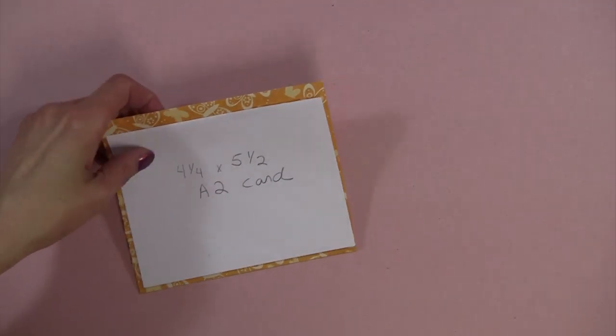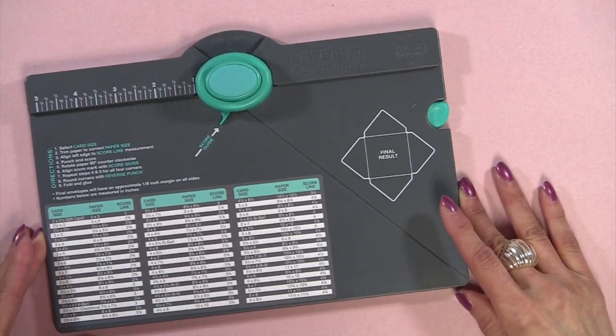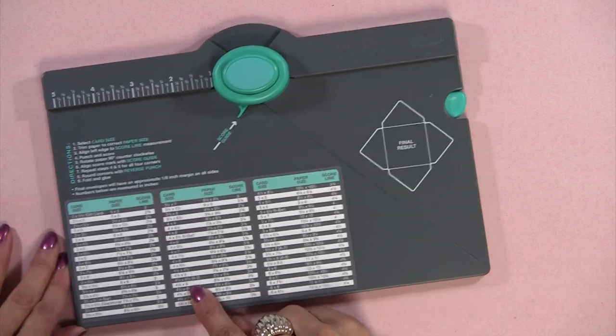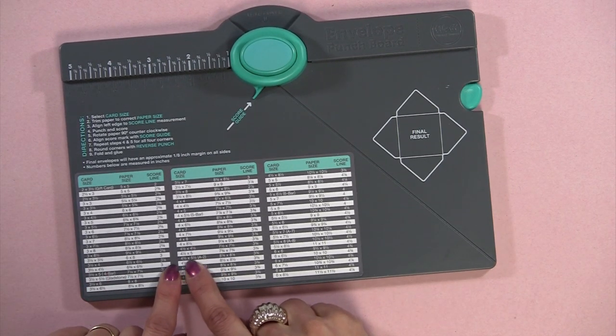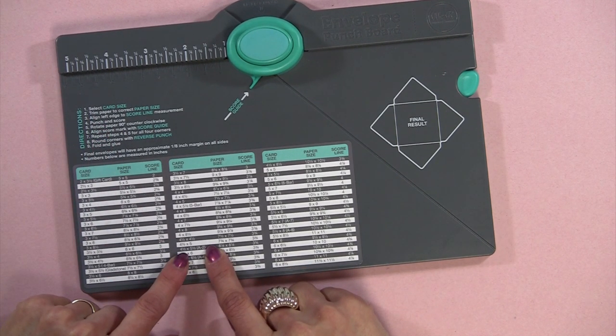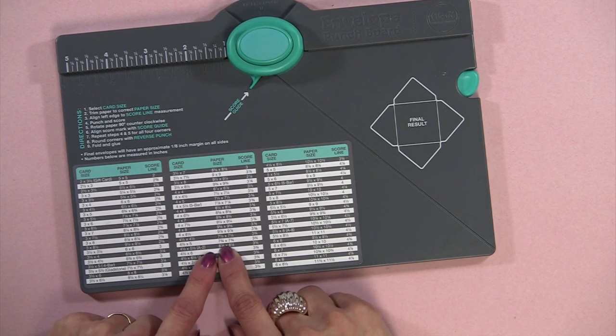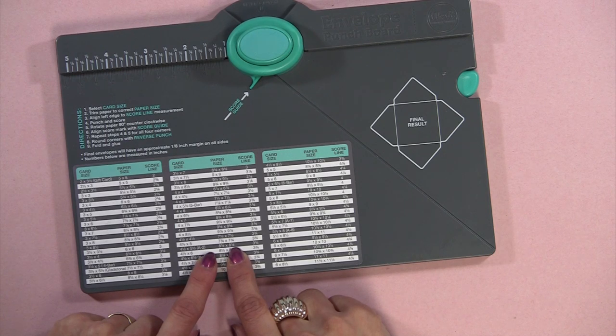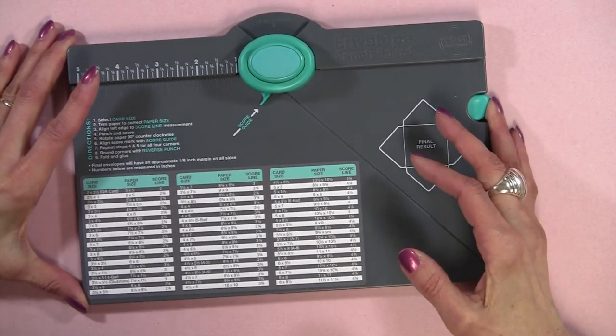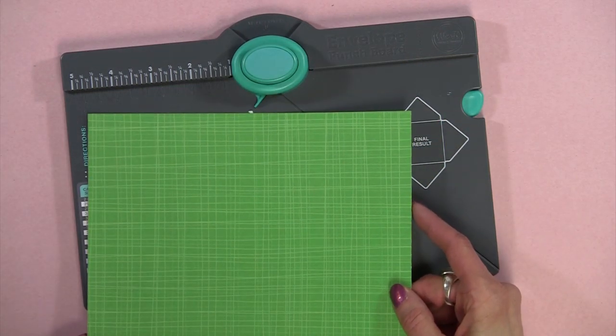And then I'll show you after we finish this a six by six card. So the first thing you do with this fun paper punch is you pick out your card size. And I'm going to go to this A2 size which is four and a half by five and a half. And I encourage you if at all possible that you view this video in HD quality, it'll be a little easier to see. And what it says here is to go ahead and cut your paper eight and an eighth by eight and an eighth.